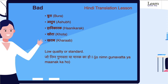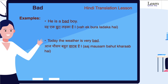Now let us understand through examples. Ab hum isey udaharan ke dwara samajte hain. He is a bad boy — Woh ek bura ladka hai. Today the weather is very bad — Aaj mausam bahut kharaab hai.